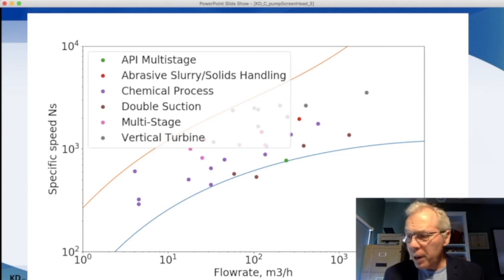As well, that old graph from Worthington predicts pump efficiencies that are often within 2 or 3% of the actual vendor data. And that's pretty good for a graph that's over 50 years old.